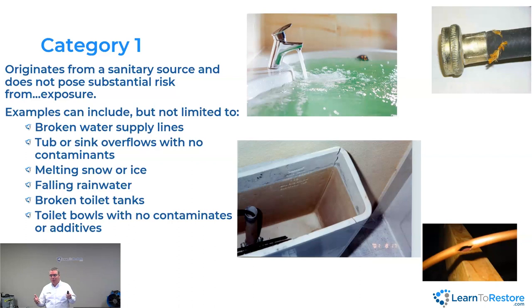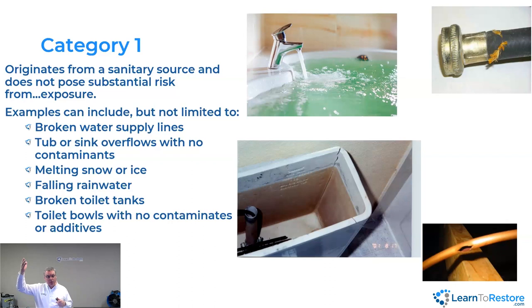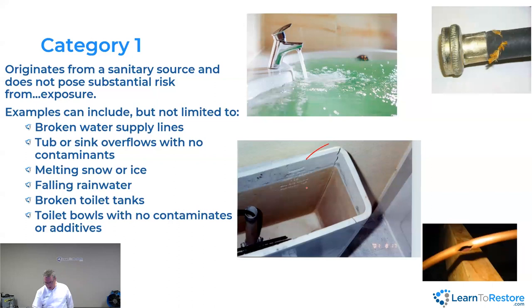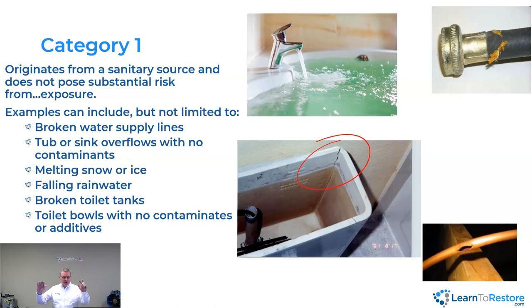Category one examples could be: a broken supply line — the water going to the sink, the ice maker, the toilet, that water is going to be considered clean. Cover sink overflow with no contaminants. Melting snow or ice or falling rainwater — I get rained on, I don't run to the hospital. Now, if rain comes through the ceiling and into the attic where there's bat guano or pigeon droppings, that's going to have an impact on the category. Broken toilet tanks — that's considered part of the supply line to the toilet, so initially it would be considered category one.